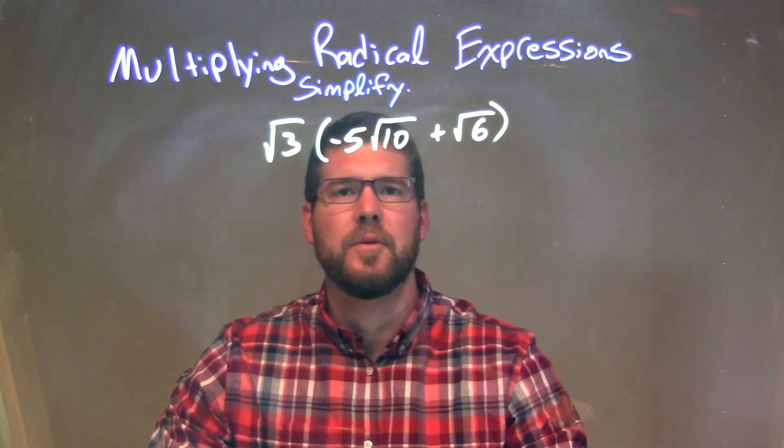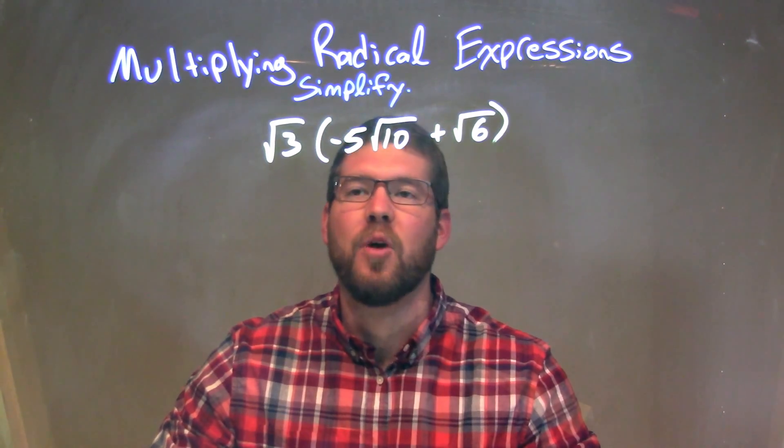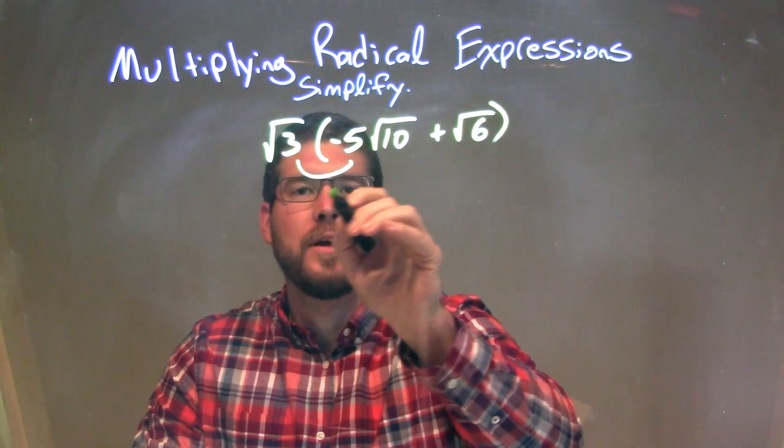What I want to do here is first, can I simplify anything within this parenthesis? Not really. So what I want to do now is distribute the square root of 3 to both parts.